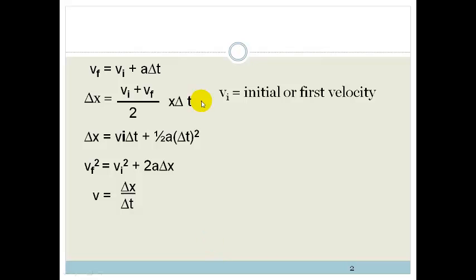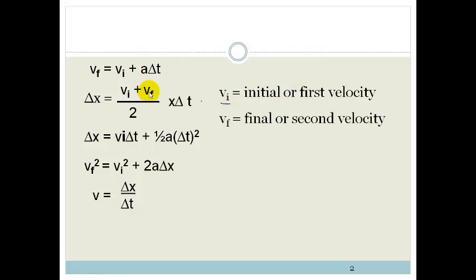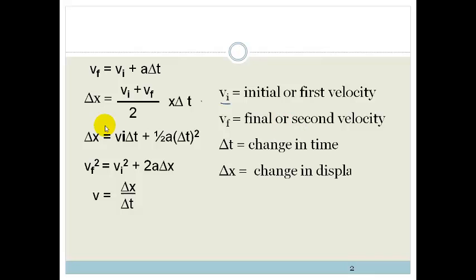The VI stands for your initial velocity, or first velocity. Your VF stands for final, or second velocity. Delta T is the change in time. And delta X is your change in displacement.